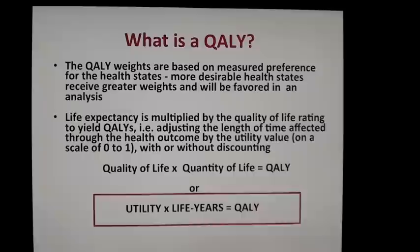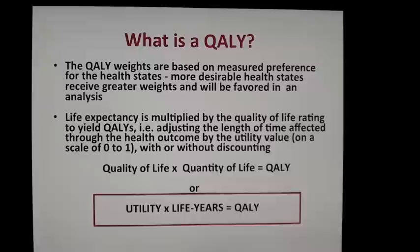So what is a QALY? QALYs are weights that are based on measured preferences for different health states, and these are called utilities. More desirable health states receive greater weights and will be favored in the analysis, whereas less desirable health states are given very low utilities. Utilities range from 0 to 1, where 0 is death and 1 is perfect health. The length of time that a patient spends on average in that state of utility is then multiplied by the life expectancy in that state of health.